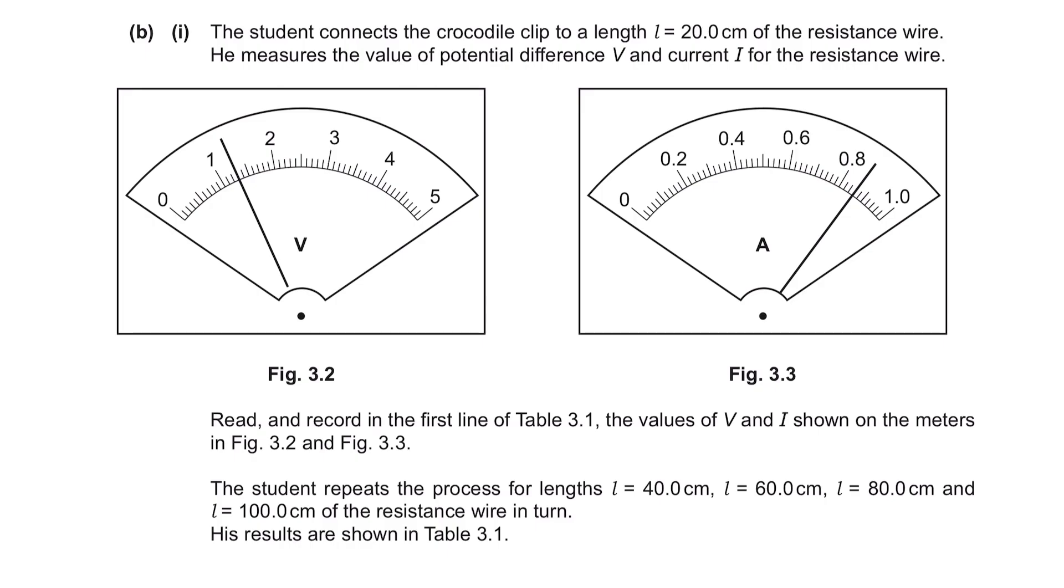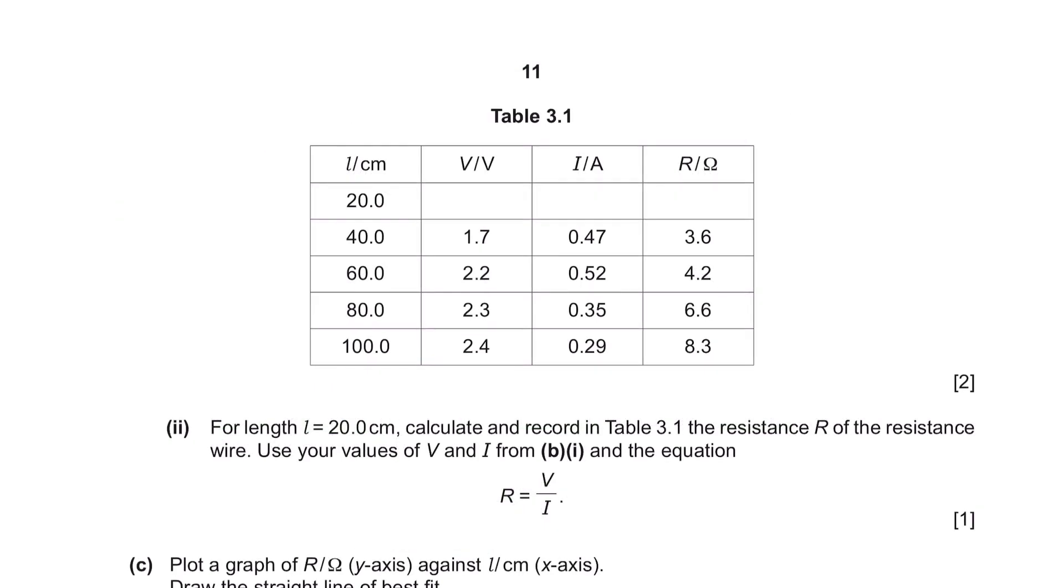Question B, part 1. The student connects the crocodile clip to a length L 20cm of the resistance wire. He measures the value of the potential difference and current for the resistance wire. The voltmeter reading here shows 1.3, and the ammeter here shows 0.86. Read and record in the first line of table 3.1 the values V and I shown on the meters in figure 3.2 and 3.3. The student repeats the process for length 40cm, 60, 80, and 100cm of the resistance wire in turn. His results are shown in table 3.1. We'll just fill in the values of voltage and current here. Pay attention that all the values in this table are written in two significant figures.